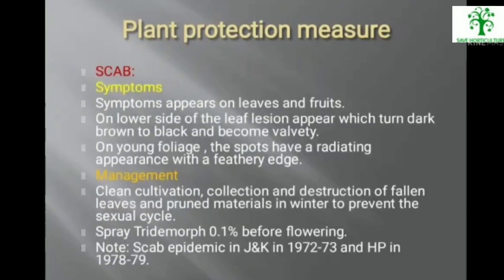Scab symptoms appear on leaves and fruits. On the lower side of the leaf, lesions appear which turn dark brown to black and become velvety. On young foliage, spots have a radiating appearance with a feathery edge. Management includes clean cultivation, collection and destruction of fallen leaves, pruning in winter to prevent the sexual cycle, and spraying dodine morph 0.1% before flowering. Scab epidemics occurred in J&K in 1972–73 and in HP in 1978–79.